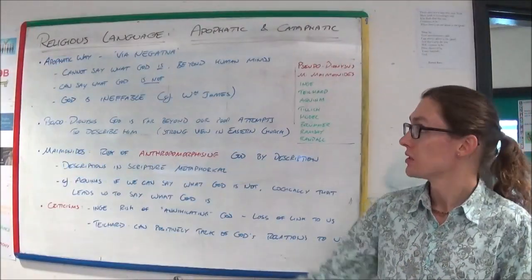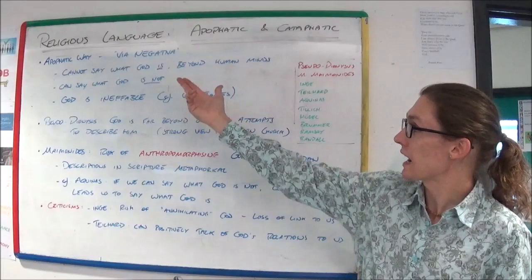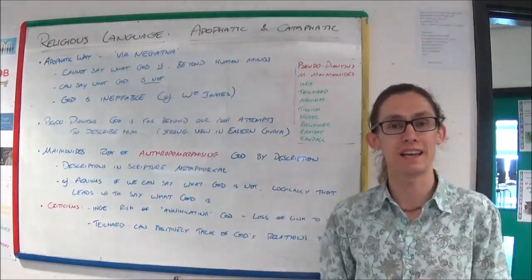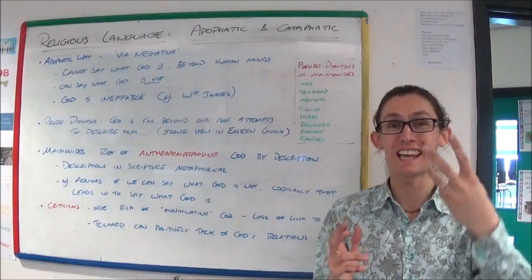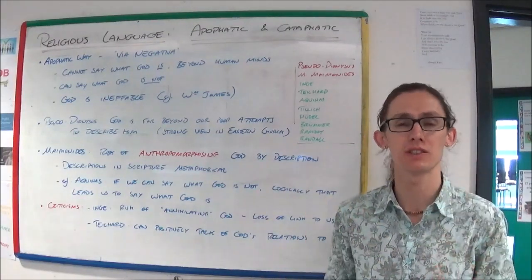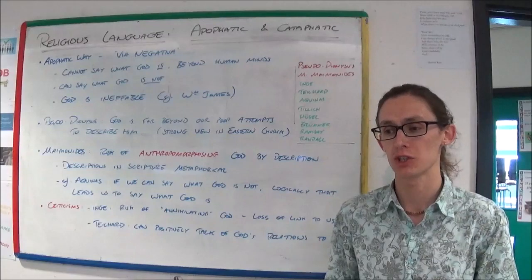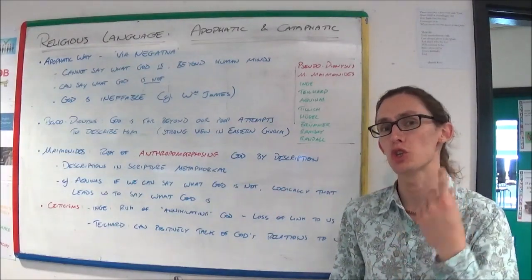The first option for talking about God is the apophatic way, or the via negativa. And this suggests we can't talk about what God is, because God is beyond our minds, beyond our comprehension. What we can do is we can say what God is not.